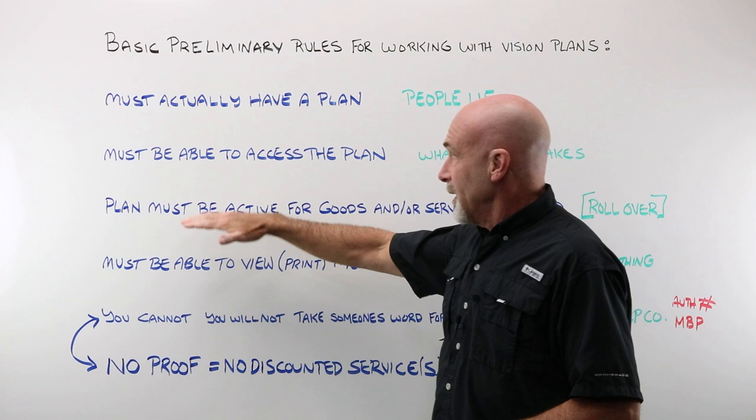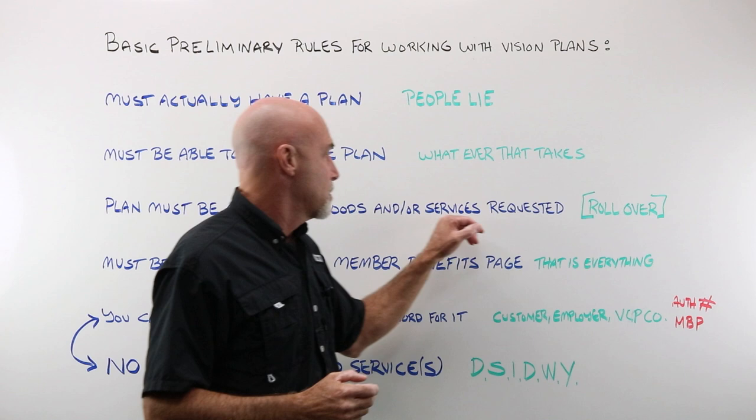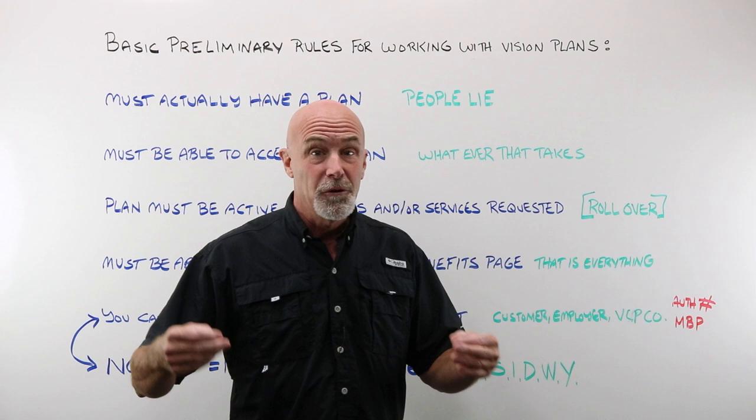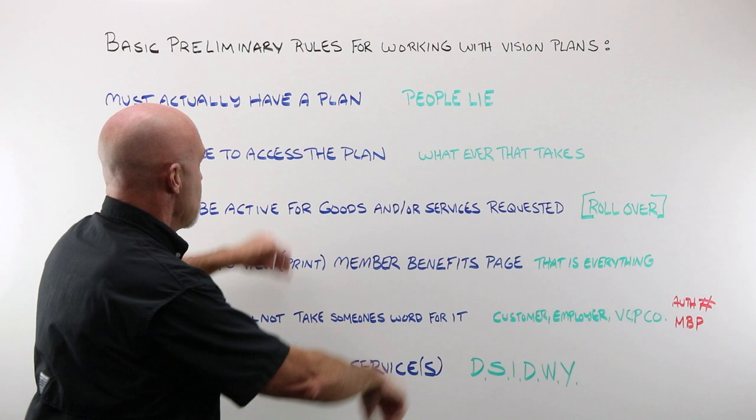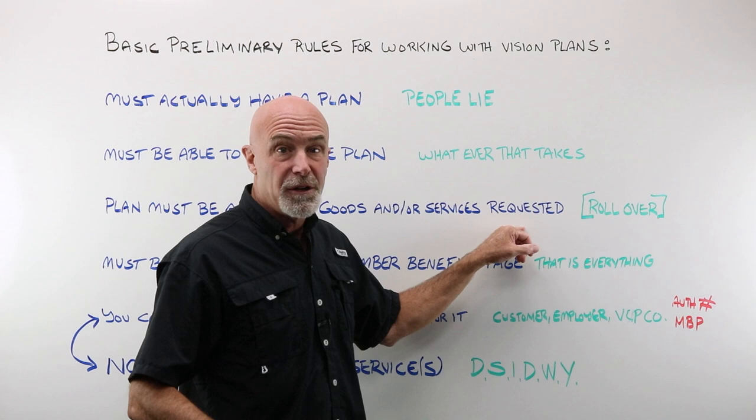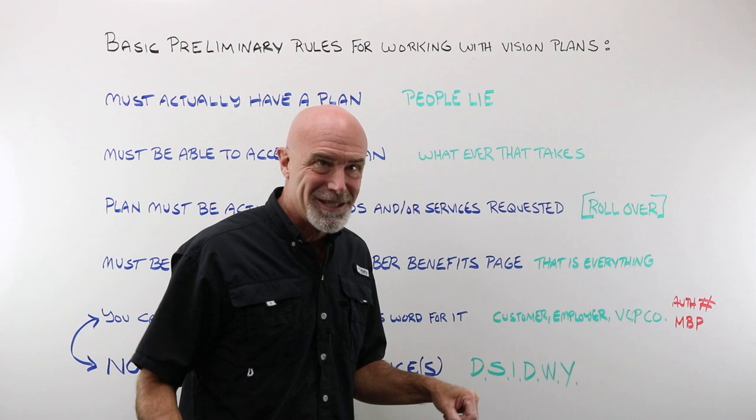That plan must be active for the goods and services that they're requesting — it's called a rollover. Every single plan is different, and it is often different for frame, lens, contacts, and exam. You can prove they have it and they want an exam, but you still have to confirm they actually have that benefit available. Some rollover annually, some from time of last exam, some are yearly, some are every other year. You never know, so you have to have that in front of you.